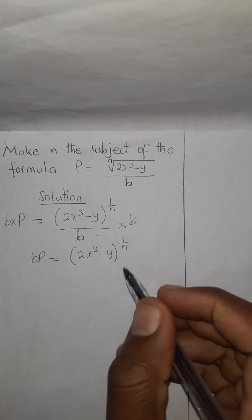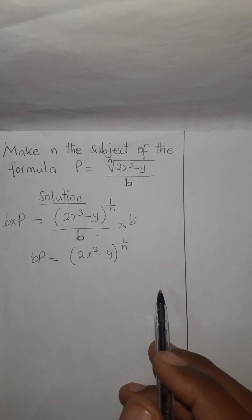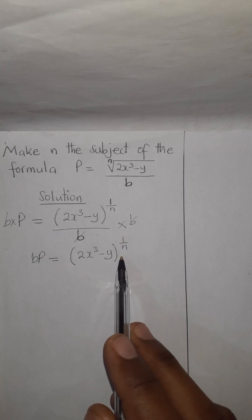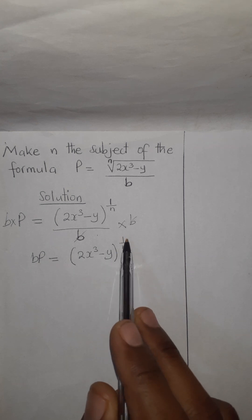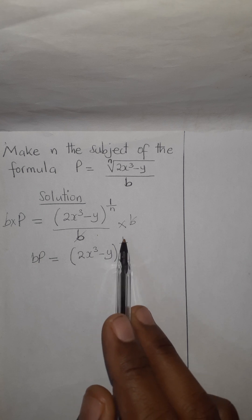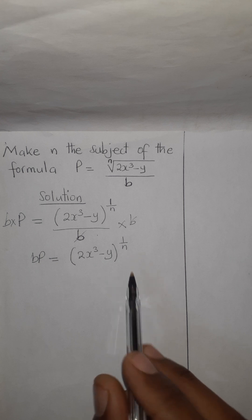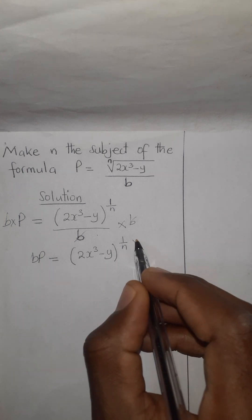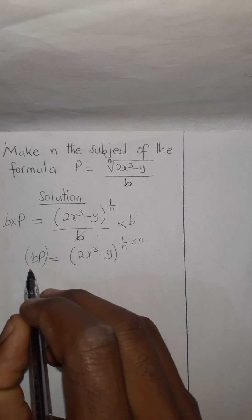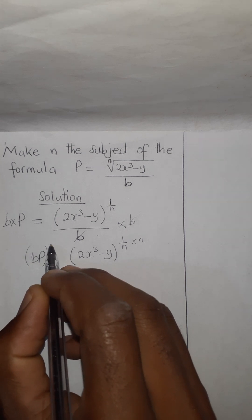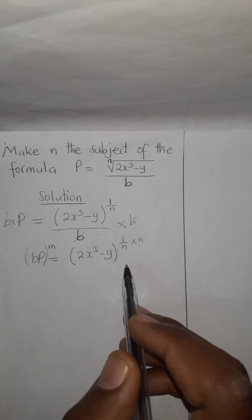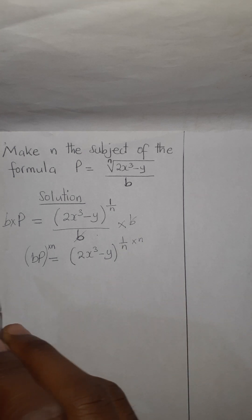After that, we have to find ways how we can remove this power 1 over n, or n through t. Because this is the power 1 over n, the best way is to multiply by n — raise both sides to the power n. Here we also put this one and raise to the power n. Make sure whatever you have done to this side, you should also do the same to the other side.